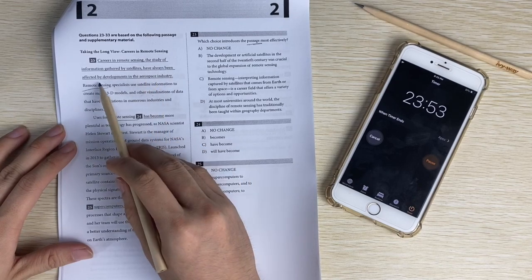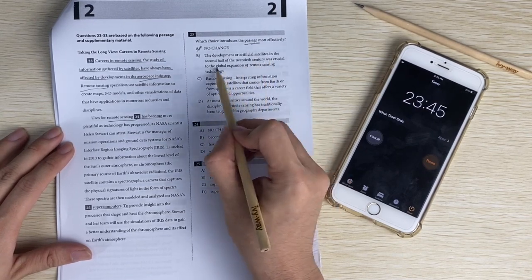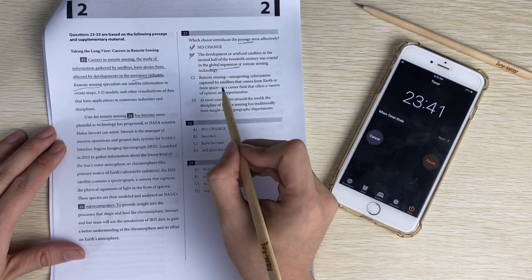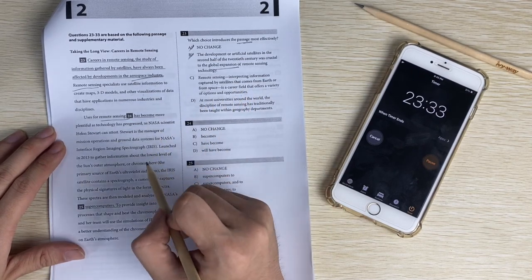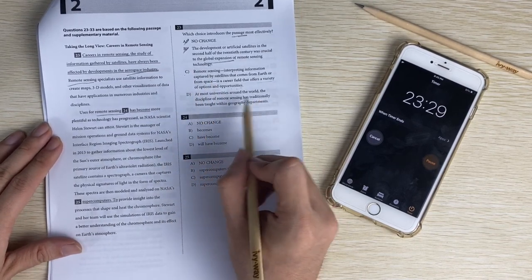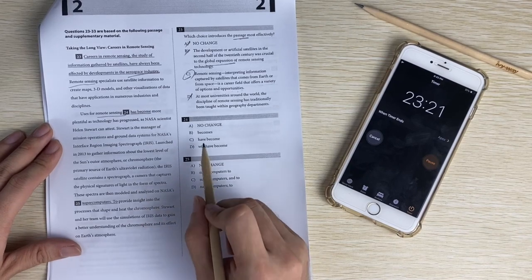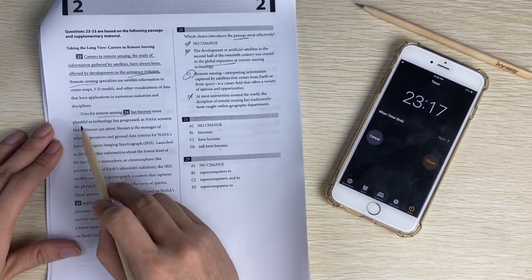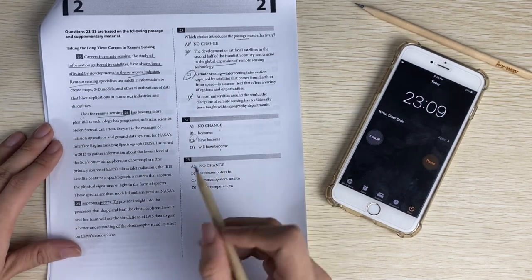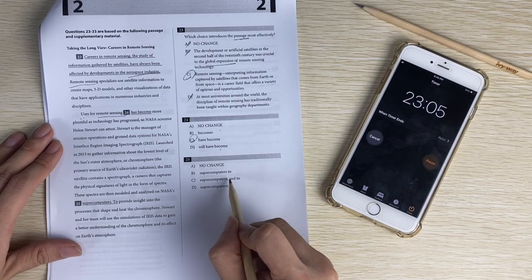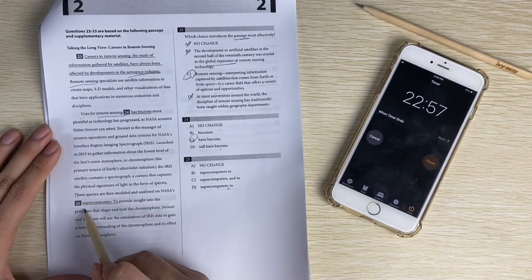Alright, so back to twenty-three. Let's see. Career always been affected by development of aerospace industry - that part is wrong. Development about crucial to the global expansion - not about expansion globally. Remote sensing is a creative field that offers value options and opportunities. There are different jobs. So the answer might be C, at most universities. That's also not what the passage is about. So it's C, likely. I'll come back to it later as I'm reading this passage. So that's probably verb tense. Twenty-four uses has become, so singular. Singular plural subject verb agreement. Uses should be plural, so have become.